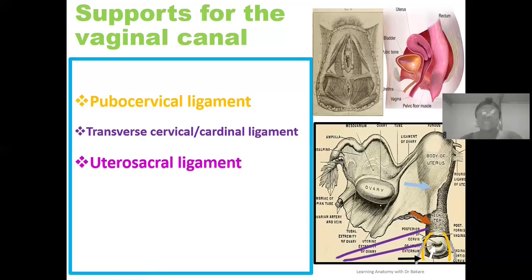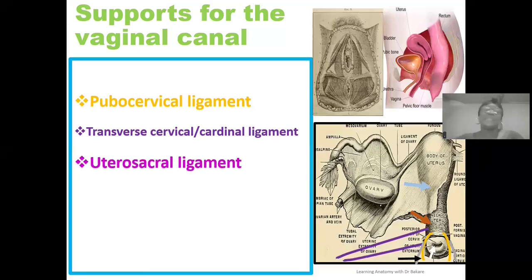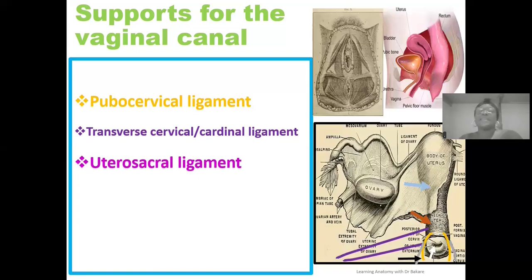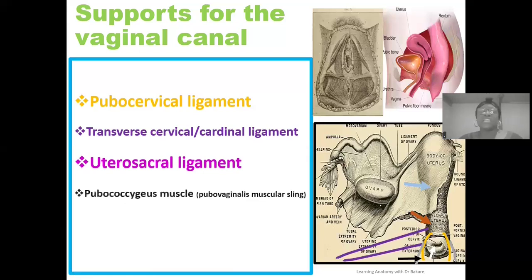The next ligament is the uterosacral ligament. Breaking down the name: it is a ligament that connects the uterus — specifically the cervix — to the base of the sacrum. This ligament is located in the posterior region; because its connection point is the sacrum, which is part of the spine located posteriorly, it cannot be seen in the anterior image. It originates from the posterior wall of the cervix and is inserted on the sacrum, and through this connection it helps reinforce and support the alignment of the vagina canal.